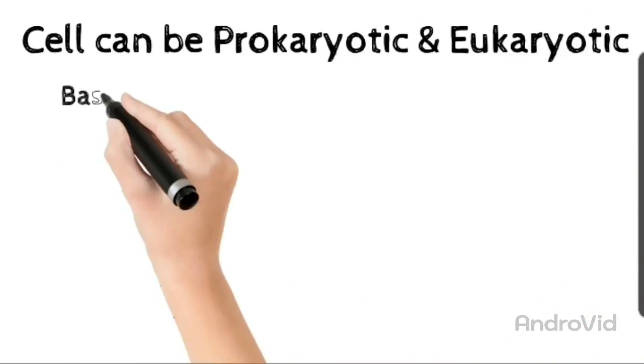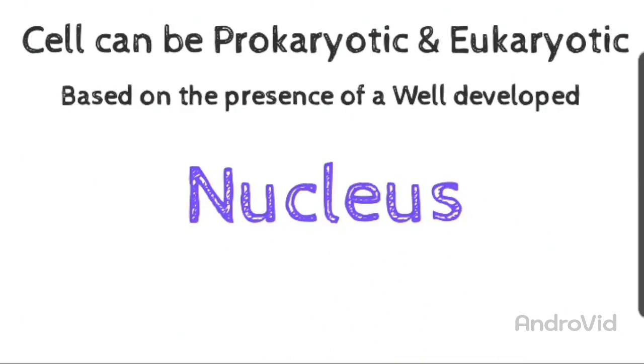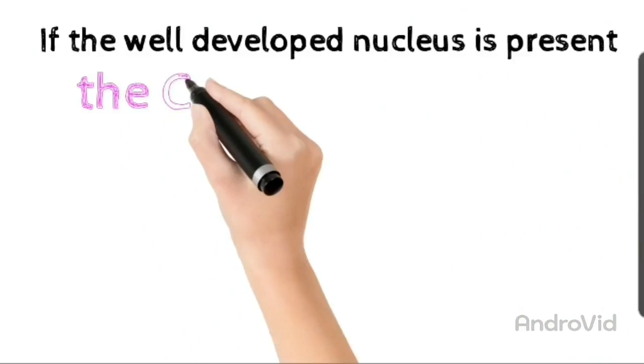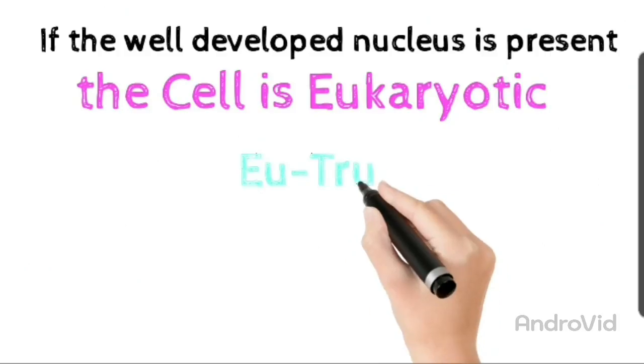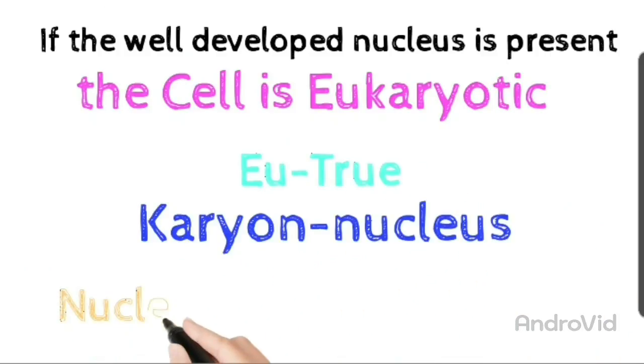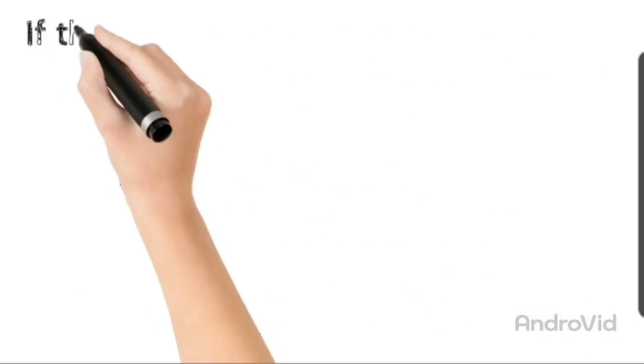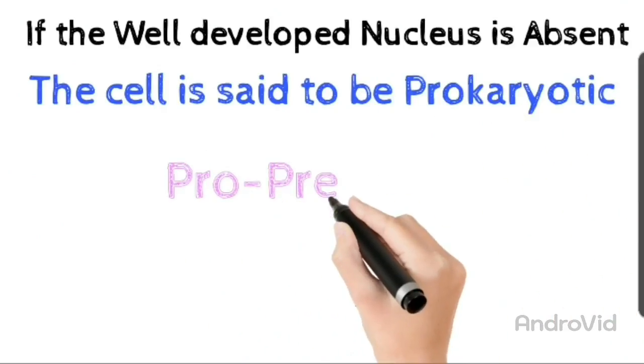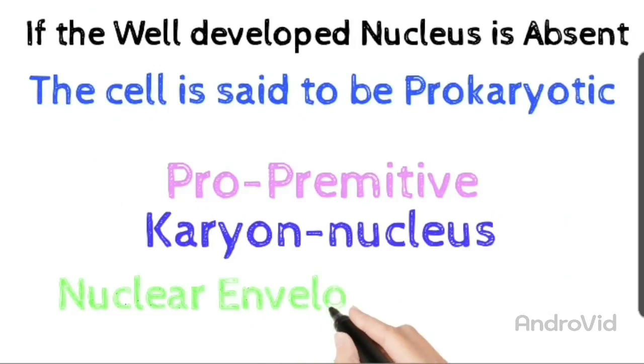Cell can also be divided into two different types that is prokaryotic and eukaryotic based on the presence of well developed nucleus. यानि वो cell जिनमें well developed nucleus present होता है उन्हें आप कहते हैं eukaryotic cell, जिसमें eu का मतलब होता है true यानि असली and karyon का मतलब होता है nucleus, यानि इनका nucleus well developed होगा और इनमें nuclear envelope भी present होगा. जबकि cells जिनमें आपका well defined nucleus absent होता है उन्हें prokaryotic कहा जाता है क्योंकि pro का मतलब होता है primitive यानि पिछड़ा हुआ and karyon का मतलब होता है nucleus, तो यहाँ पर nuclear envelope आपको नहीं देखने को मिलेगी.